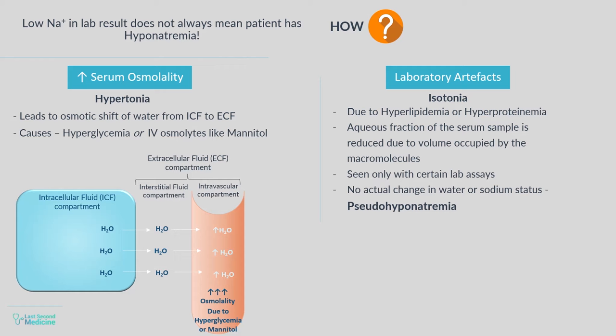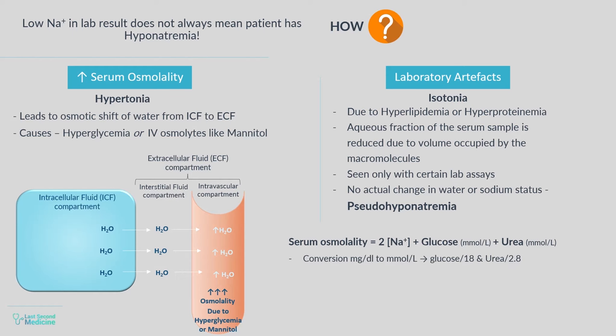After getting hyponatremia in the lab result, we shall first check whether hyponatremia is actually due to low sodium or the result of the aforementioned phenomenon. Therefore, estimate the serum osmolality using this equation: serum osmolality equals 2 times sodium concentration plus glucose plus urea, with both glucose and urea in millimole per liter. To convert from milligram per deciliter, divide glucose by 18 and urea by 2.8. Normal serum osmolality ranges between 275 to 295 milliosmoles per kg. If osmolality is less than 275 milliosmoles per kg, hyponatremia is true and is not the result of lab artifacts or hyperosmolality.